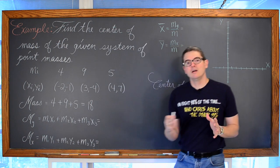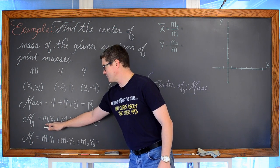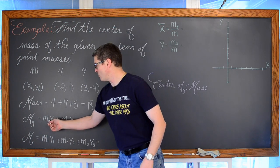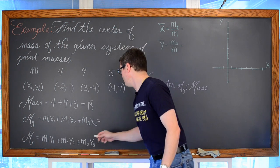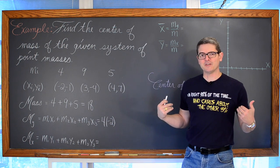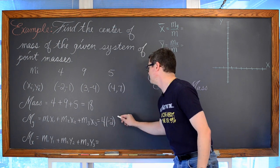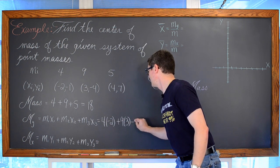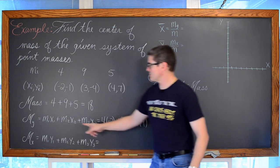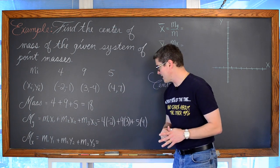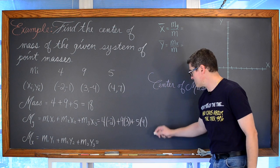The moment about the y-axis: take each mass times its corresponding x-coordinate. We have 4 times −2, plus 9 times 3, plus 5 times 4. That gives −8 + 27 + 20 = 39. So the moment about the y-axis is 39.